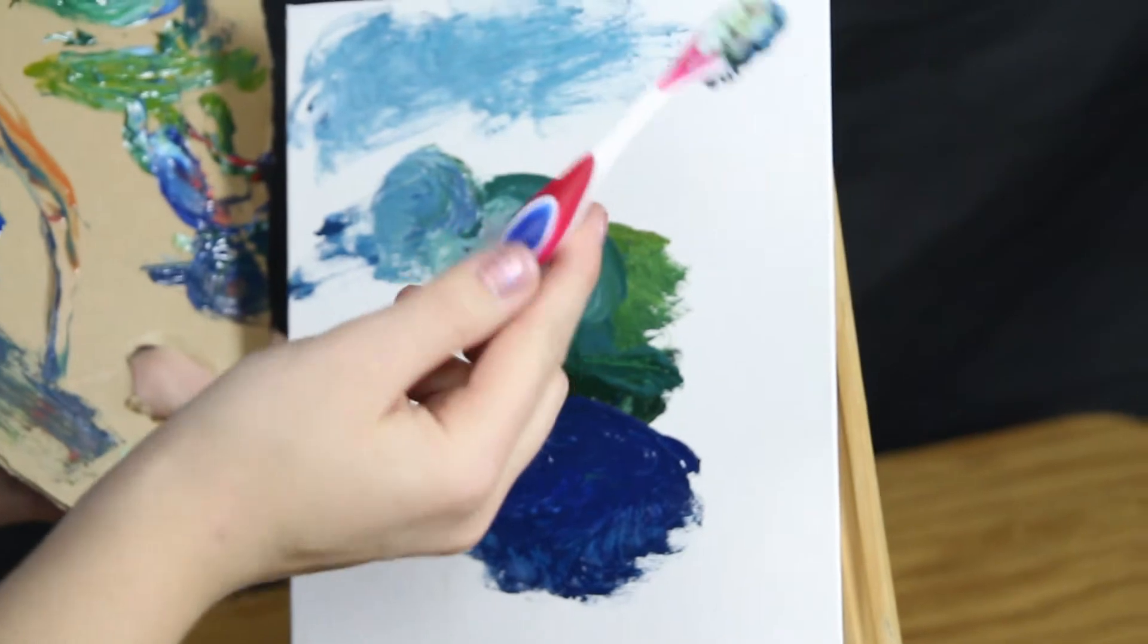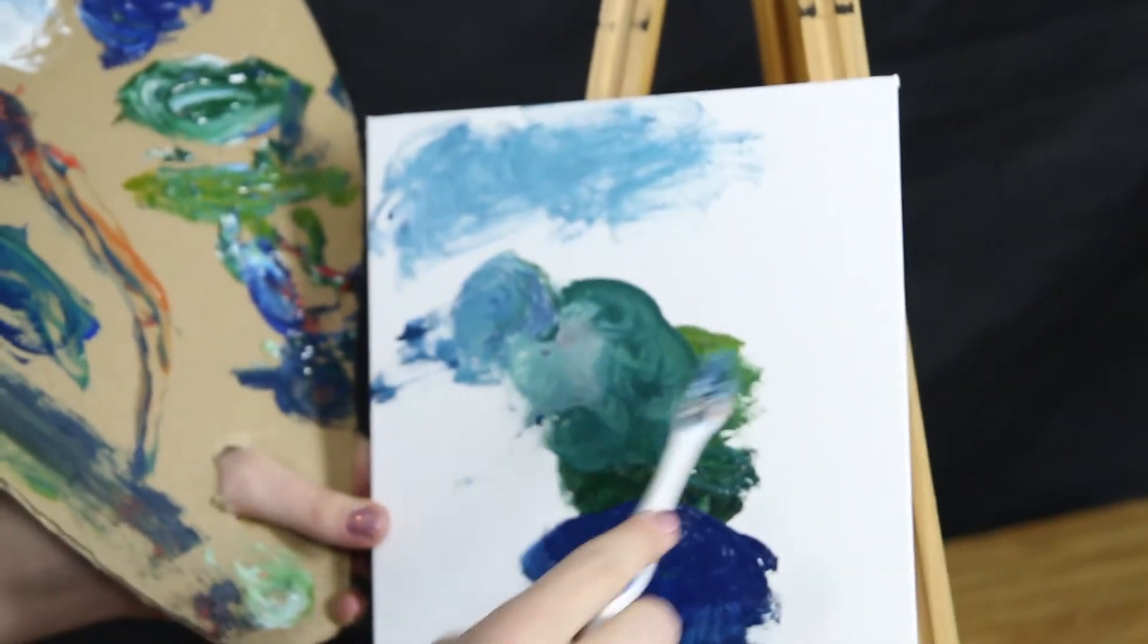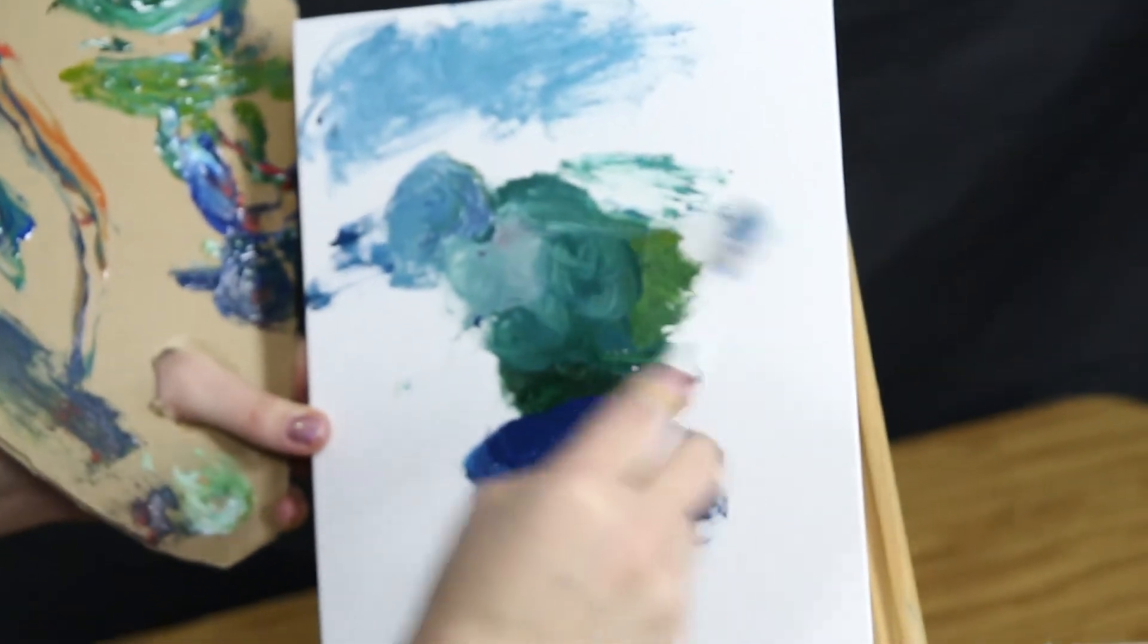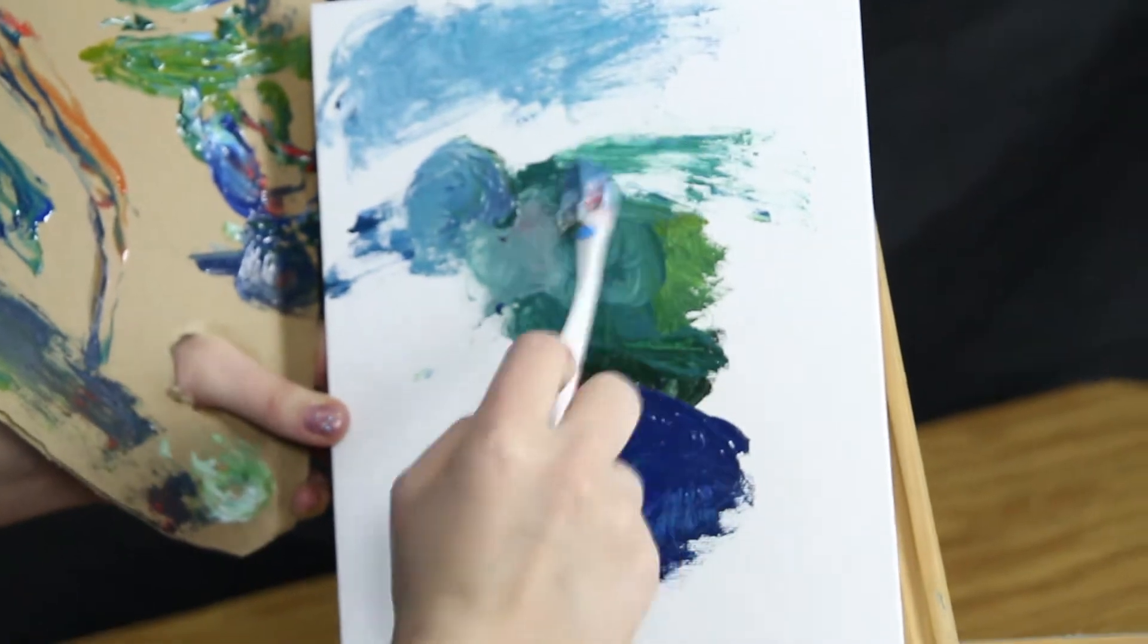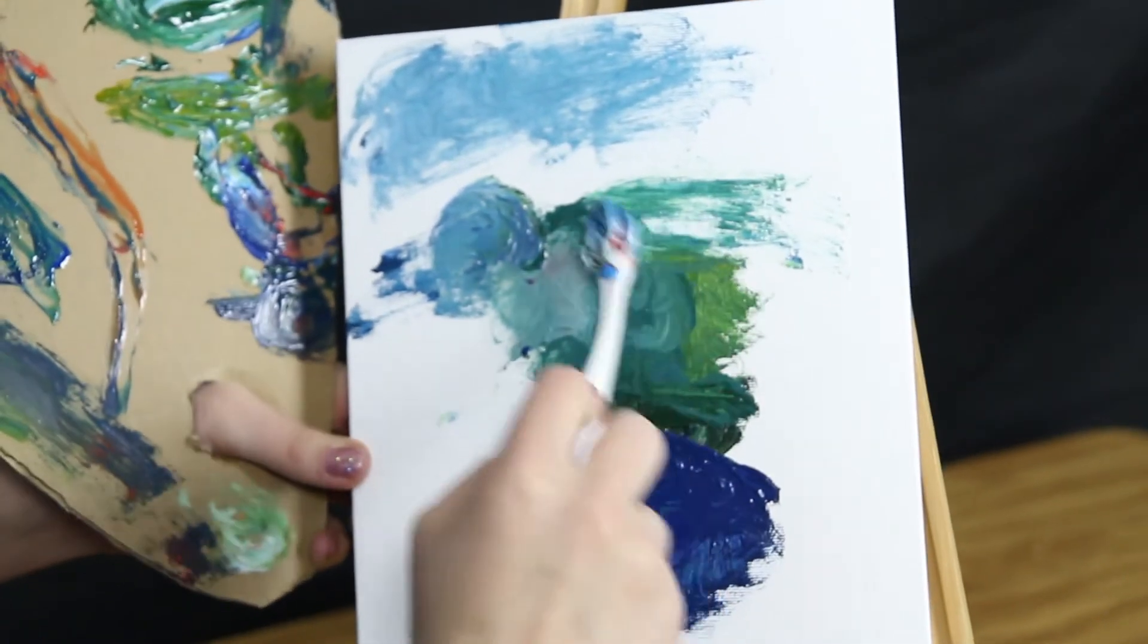If you take the back of the toothbrush, back of the toothbrush, just squish it. Makes this beautiful sort of texture. Kind of a beat. Beat it at you.